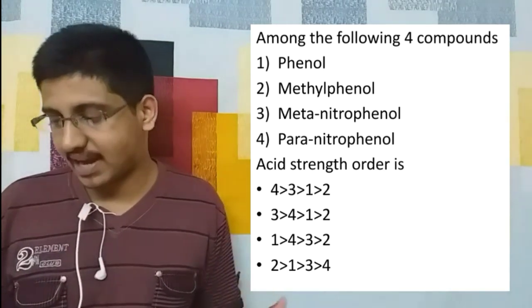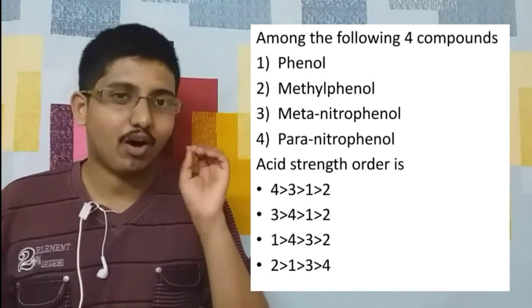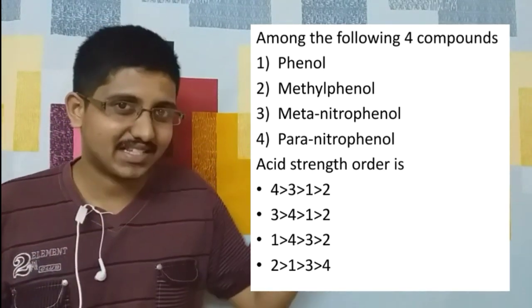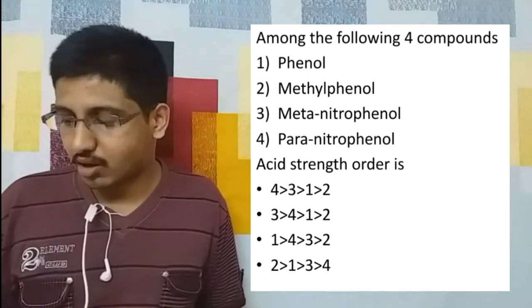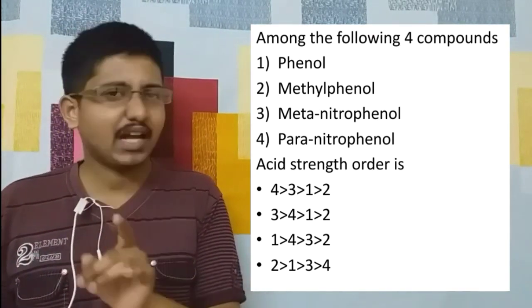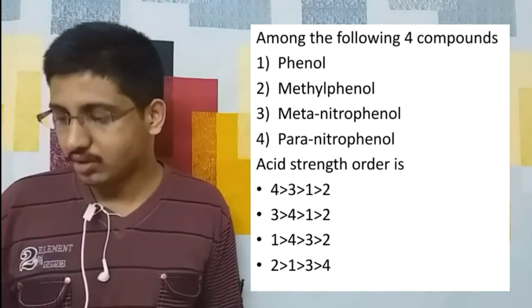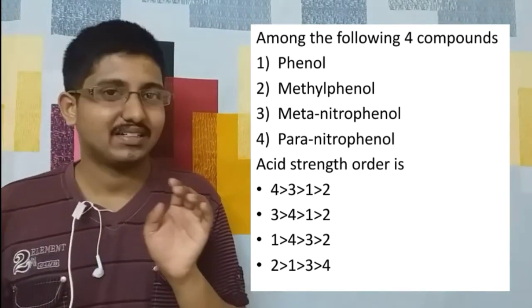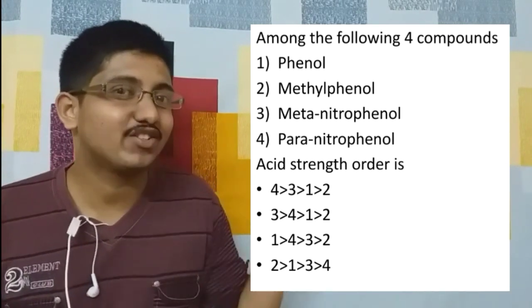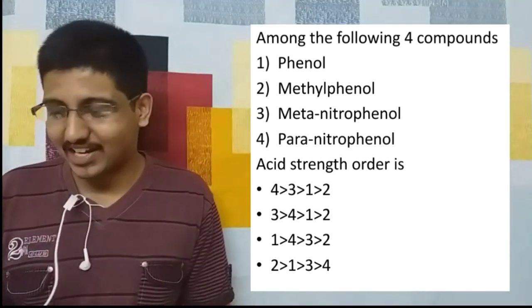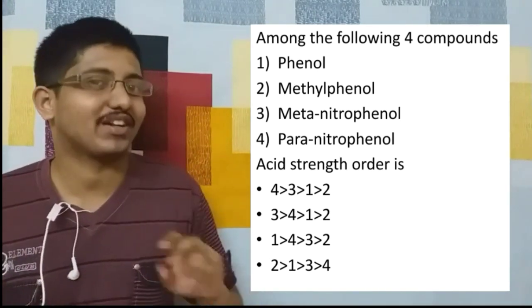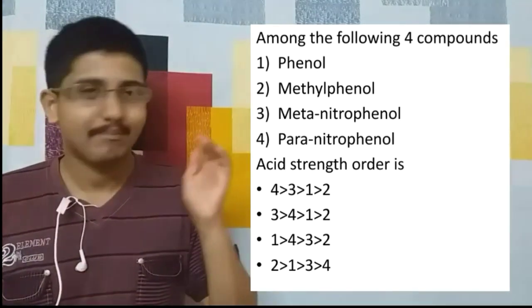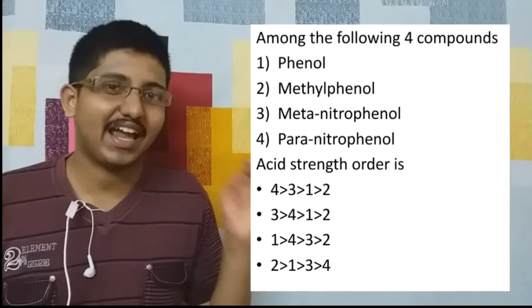The final question: among phenol, methylphenol, metanitrophenol, and paranitrophenol, arrange in order of acidic strength. Methylphenol is less acidic than phenol. Using the nitro mnemonic 'POM': paranitrophenol > metanitrophenol > phenol > methylphenol. So the correct answer is option A.